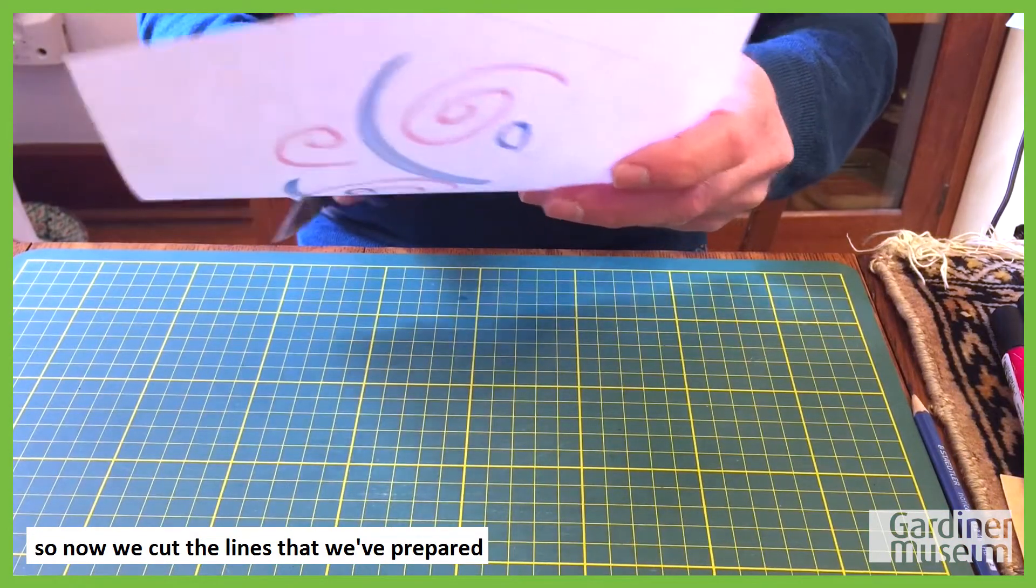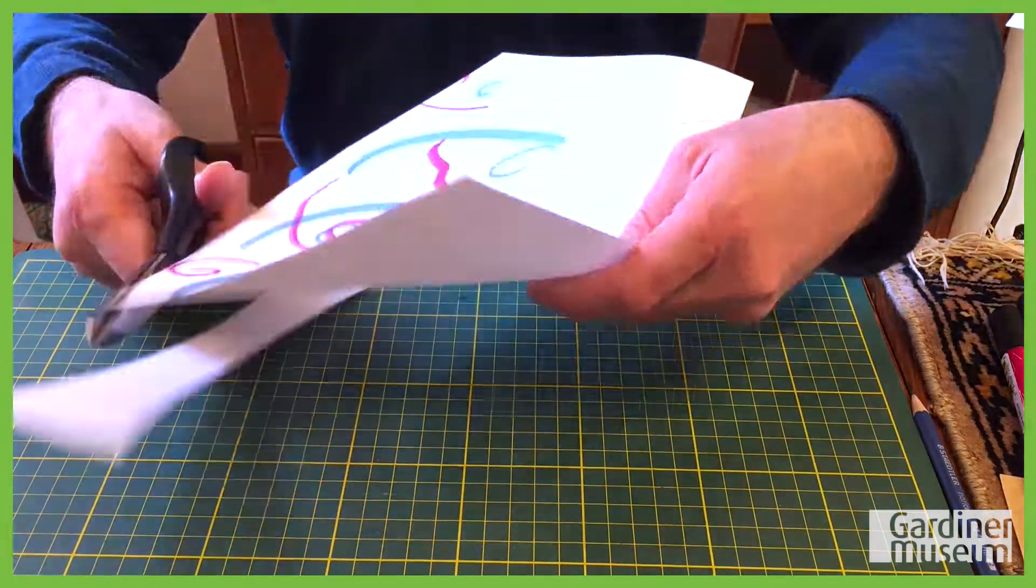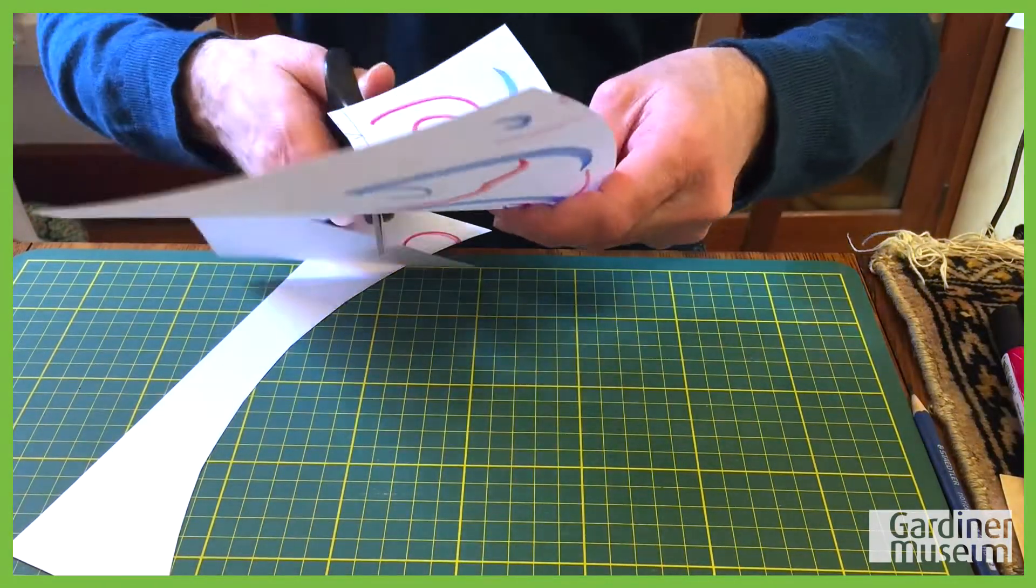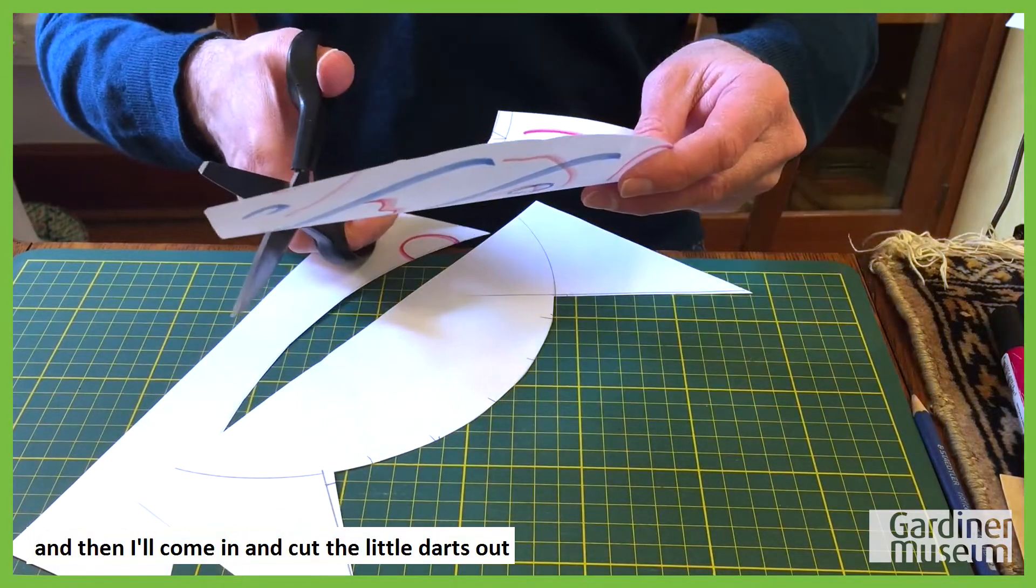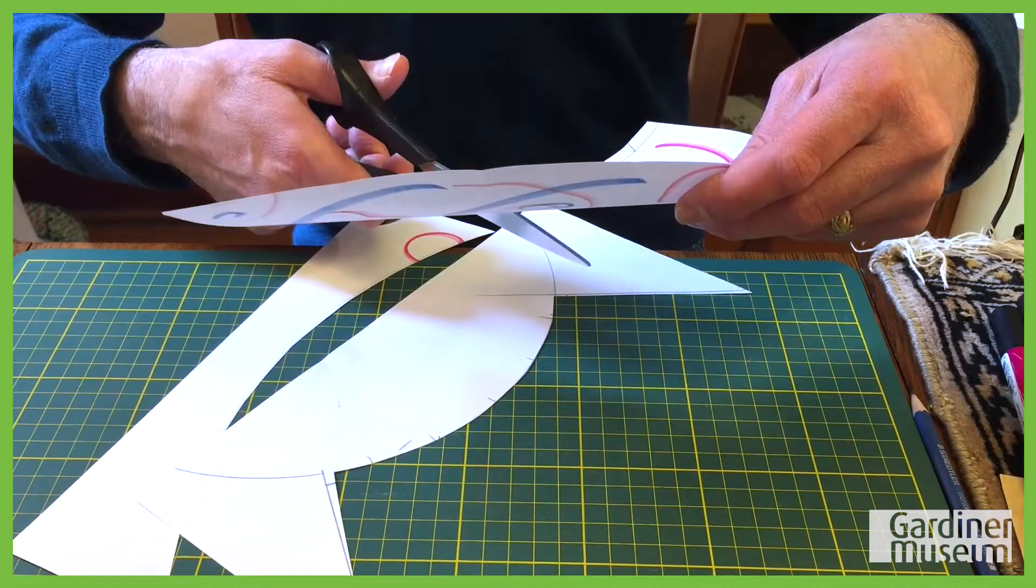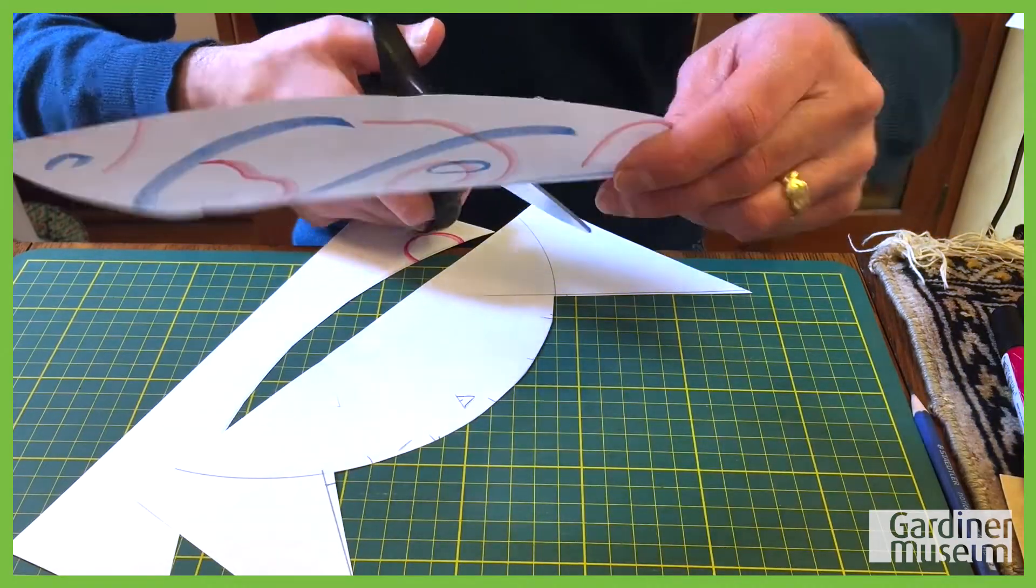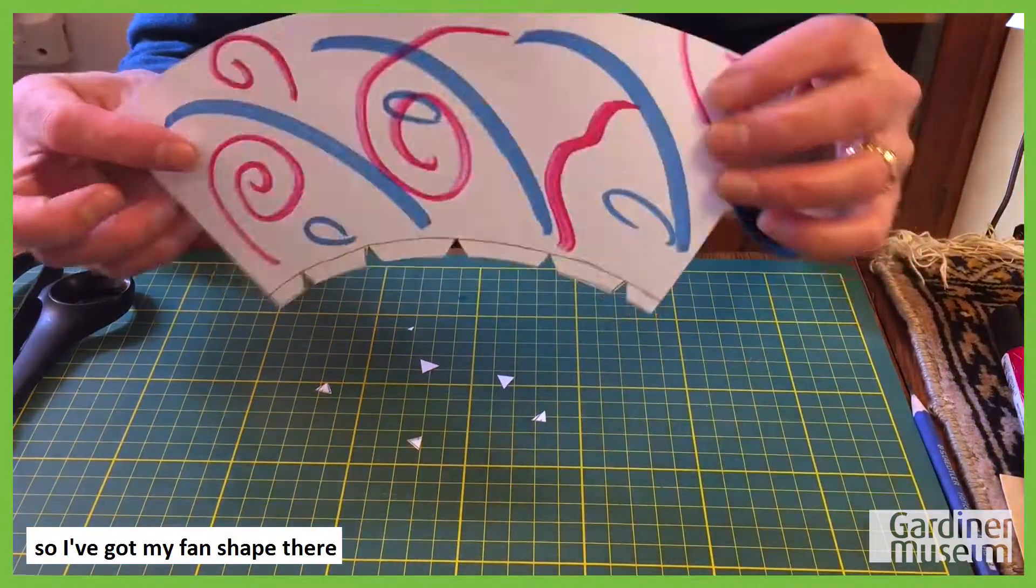Now, cut the lines that we've prepared. And then I'll come in and cut the little darts out. So I've got my fan shape there.